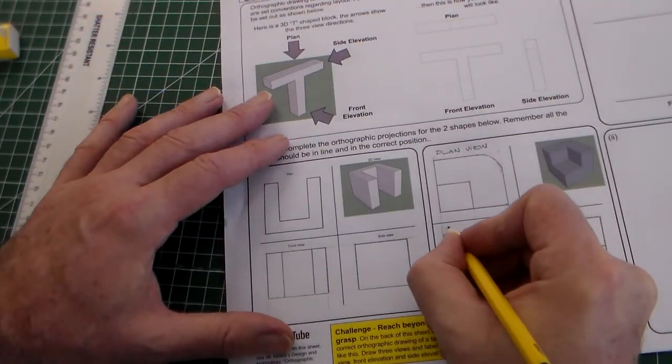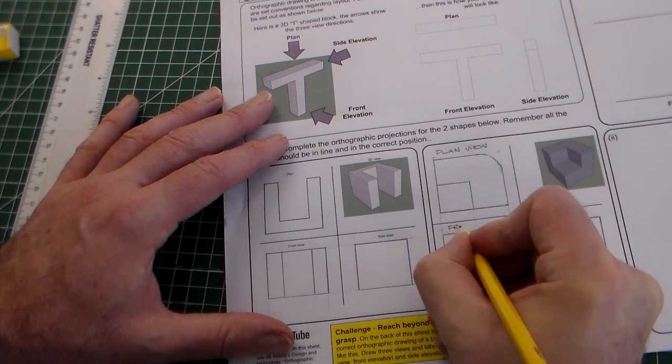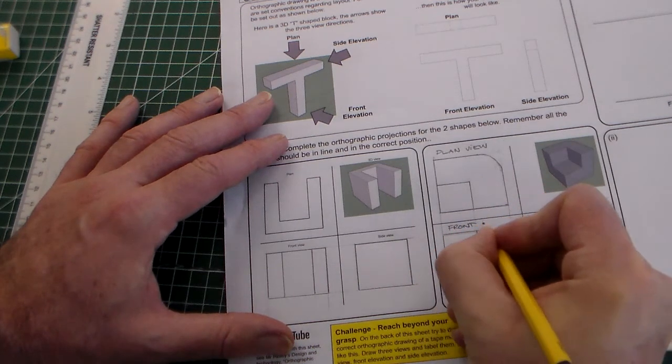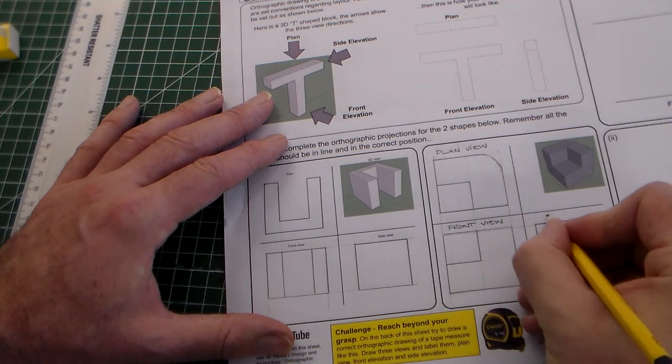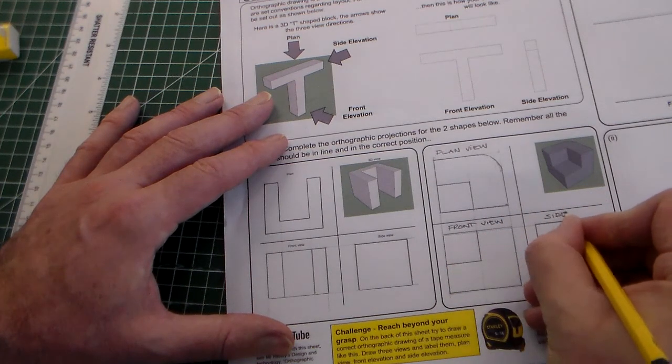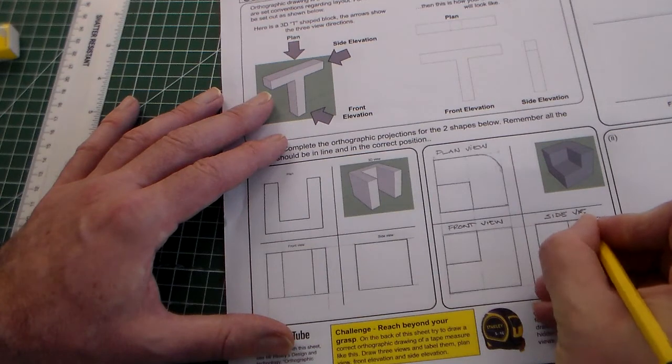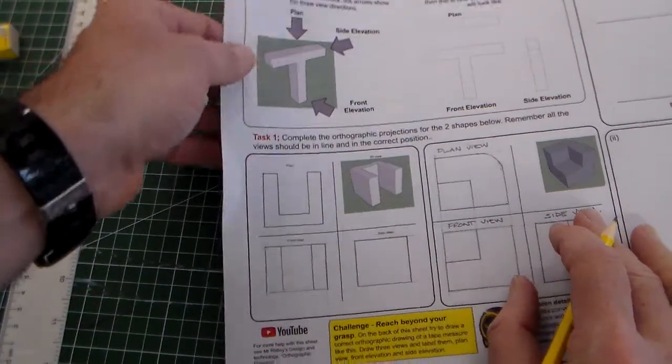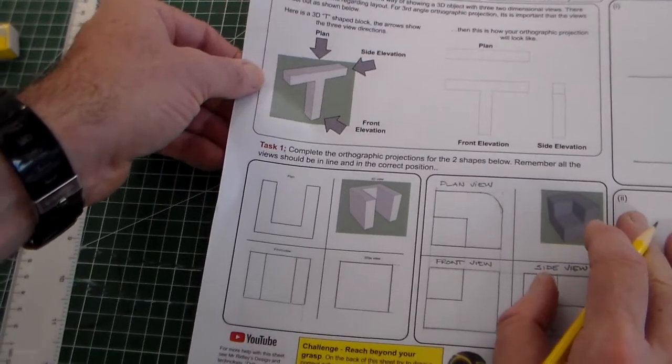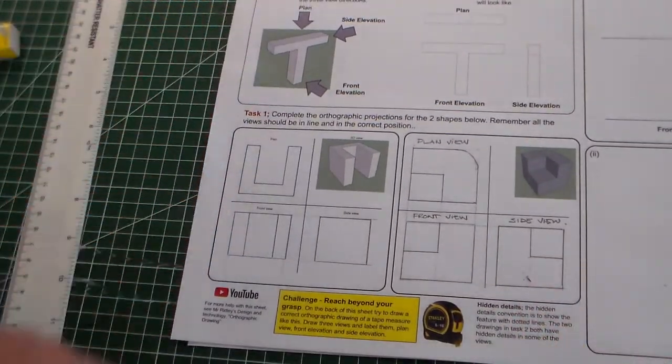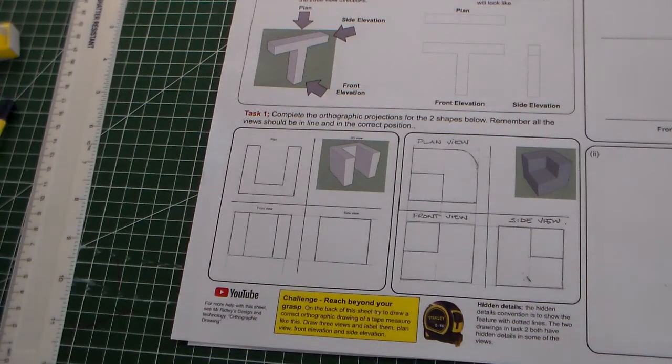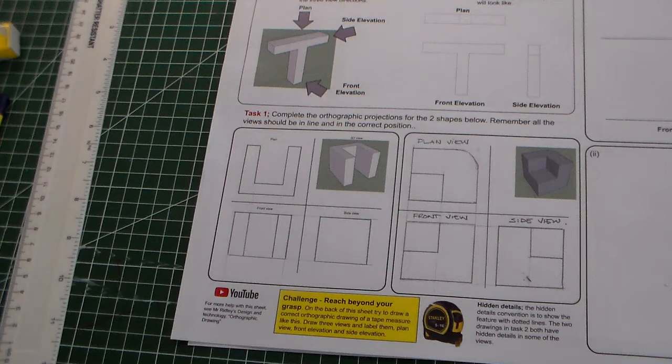Just tidy that up there. And we can just label those. Front view. So there is the completed task one for the orthographic drawing introduction. And here we're going to see the next one.